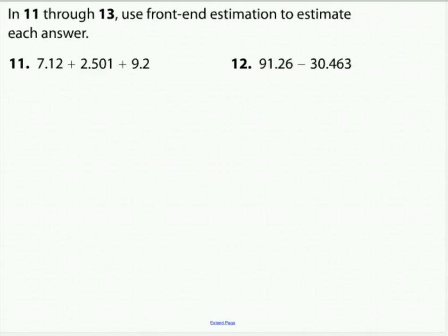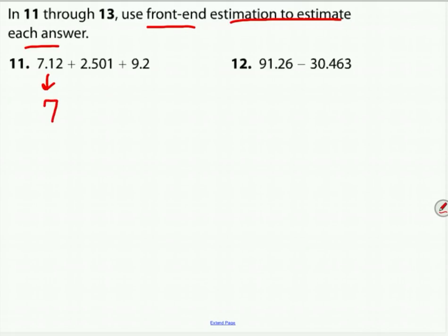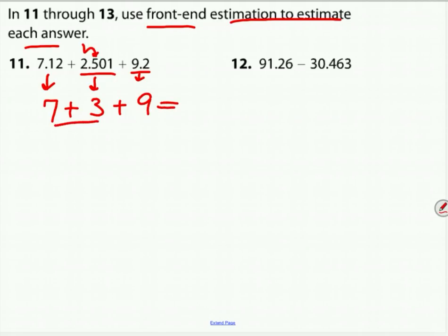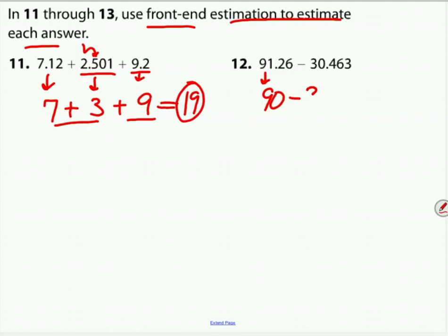Now try the front-end estimation problems — pause the video and see how you do. With front-end estimation: 7.12 becomes 7, 2.501 rounds to 3 (because five tells two to round up), and 9.2 rounds to 9. Seven plus three is ten, plus nine gives an estimated answer of 19. For the next problem: 91.26 rounds to 90, and 30 stays as 30. Subtracting gives an estimate of 60.